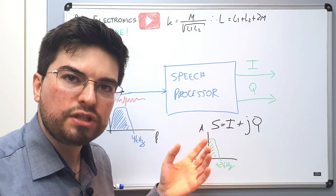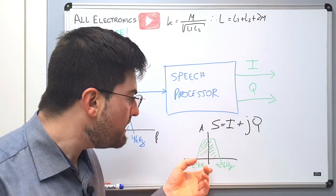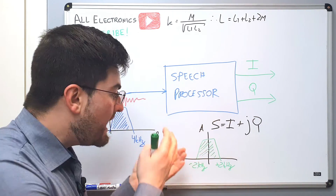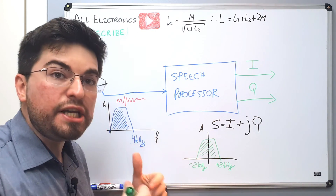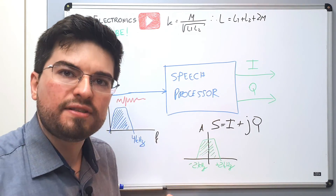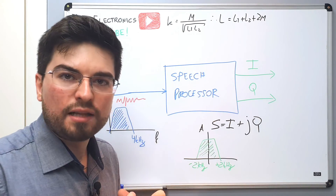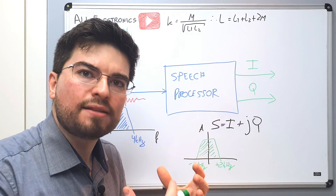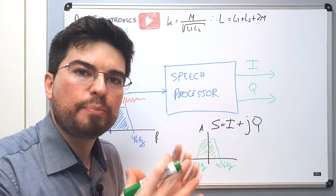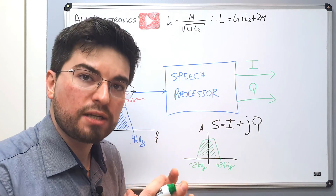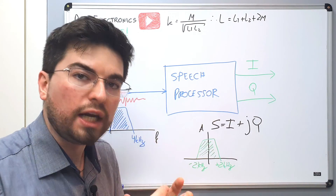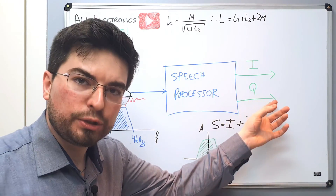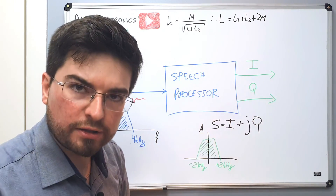This is a real zero IF baseband signal and it is a very useful representation because it can be used to generate single sideband transmissions using only a quadrature up-converter.